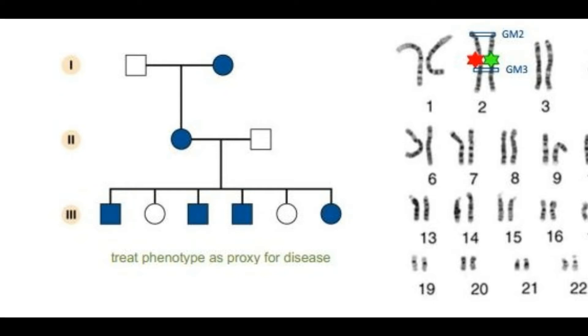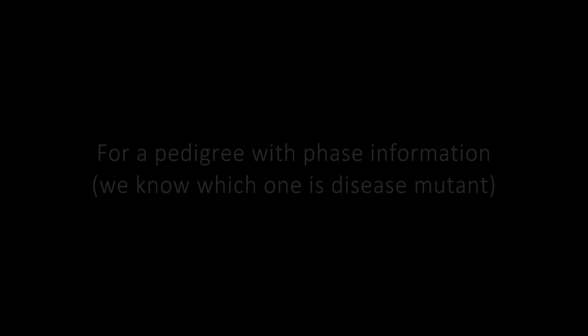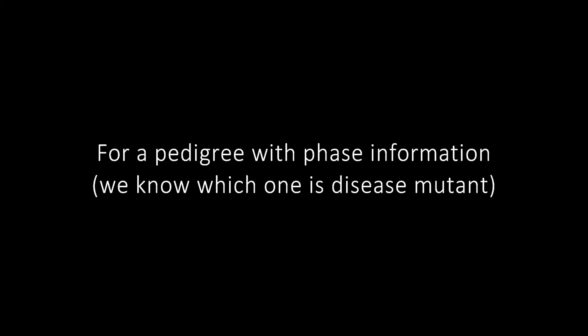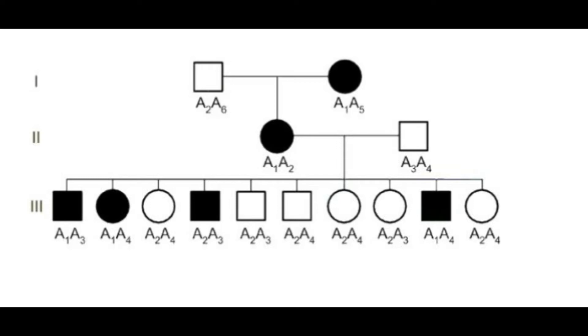For the first example, I will show a pedigree where we have three generations and we know that the disease mutation is given in black color. We are trying to locate the recombination fraction theta and the LOD score. I will show how to calculate this using an Excel file.